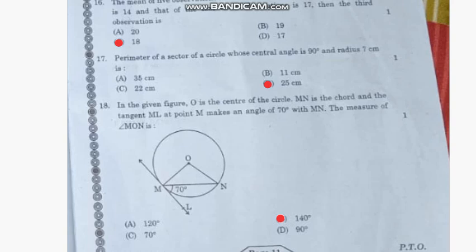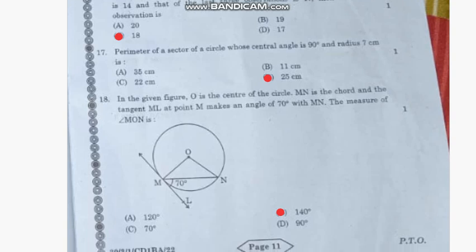Question number 17: The perimeter of a sector of a circle whose central angle is 90 degrees and radius is 7 centimeters is—the correct answer is 25 centimeters.